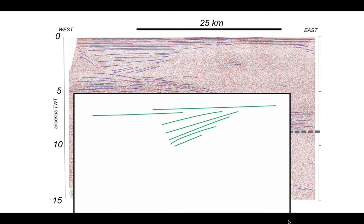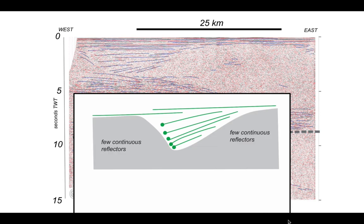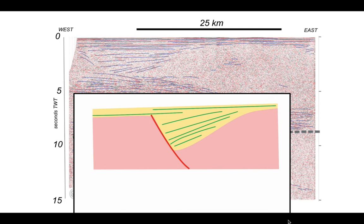Those tilted patches terminate down-dip. These terminations seem to occur towards areas with very few continuous reflectors. I'm going to assume that those areas with few continuous reflectors are not sedimentary rocks — in other words, they're the crystalline basement. Therefore the sedimentary rocks are butted against the crystalline basement against a steep structure, which we're going to call a fault. So the sediments are in a half-graben, and the basement has no strong reflective layering. We can interpret the sense of movement on the fault accordingly.